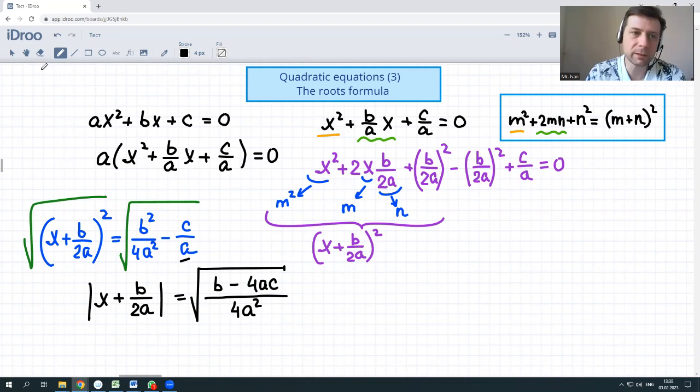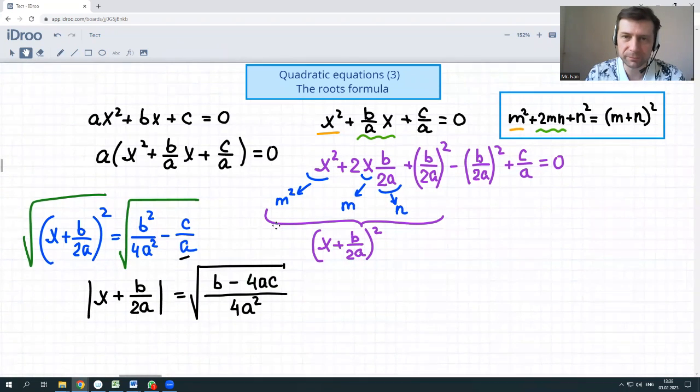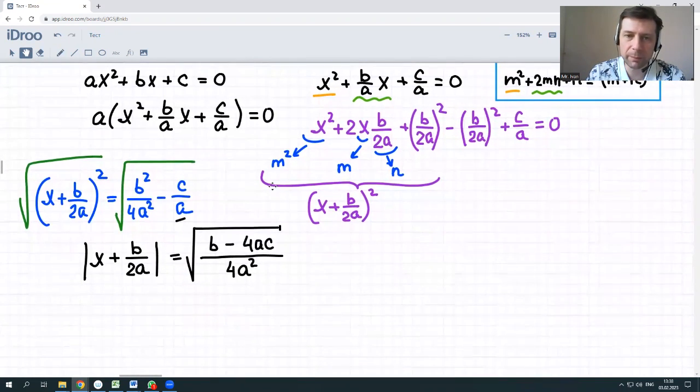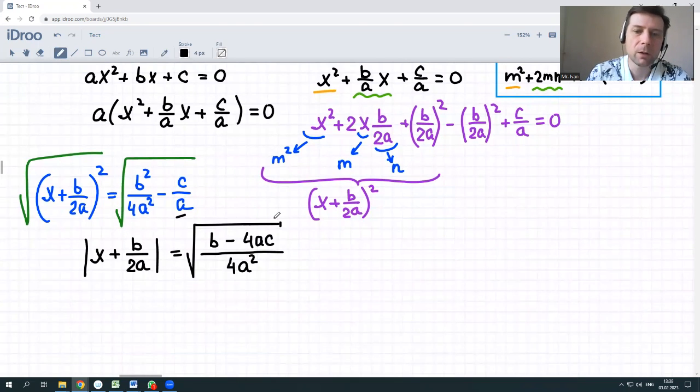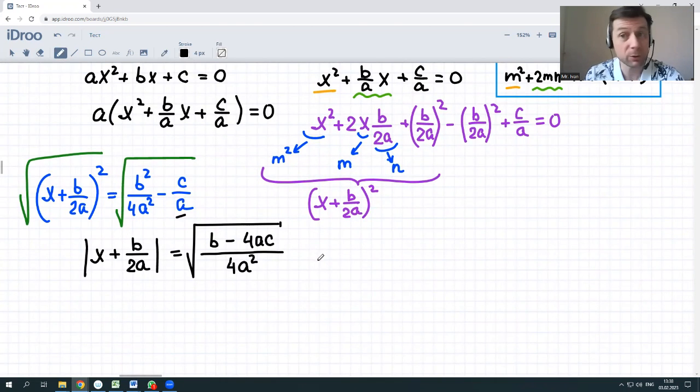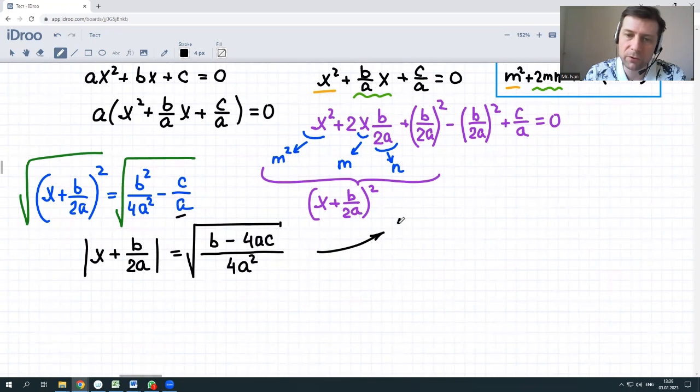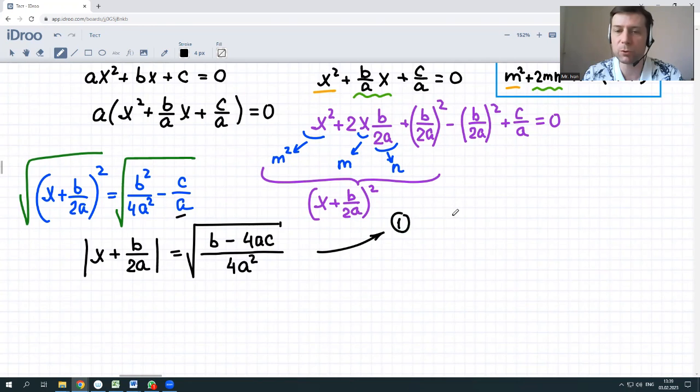When we expand the absolute values, we have to think of two possibilities or two options: either the expression under the absolute value is positive, or it's negative. Let's take those two cases. First case: if x plus b over 2a is positive, then x plus b over 2a